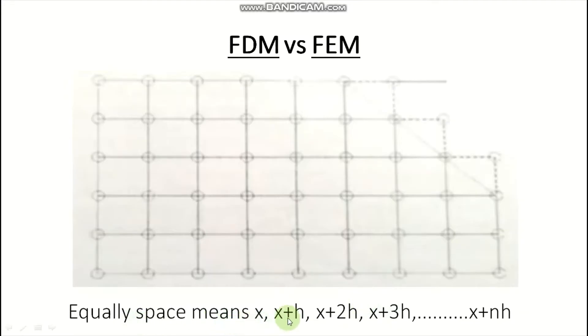So equally spaced means x, x plus h, x plus 2h, x plus 3h, and so on up to x plus nh. So there are three types of differences. First, that is forward, second backward, and third one is central difference.